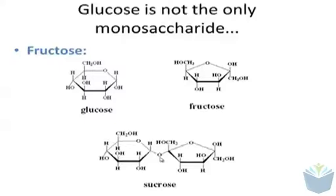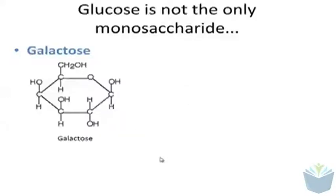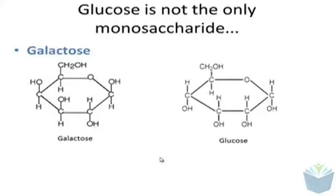Another type of monosaccharide is called galactose and due to the shape you can see it's hexagonal, therefore a six carbon sugar. That can actually join to glucose and that forms the disaccharide lactose.